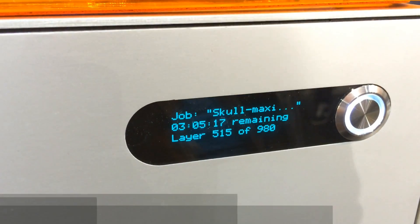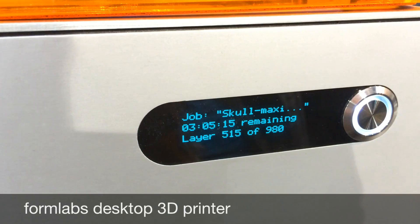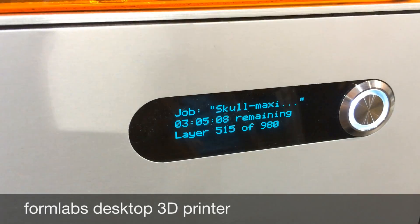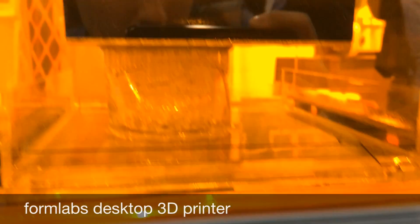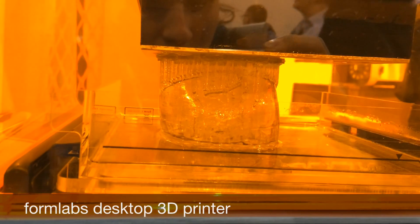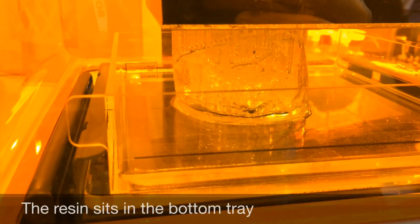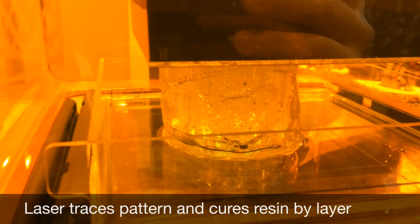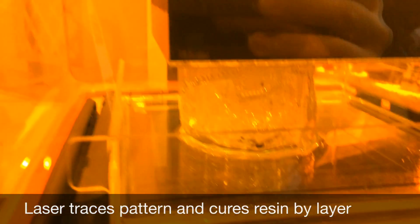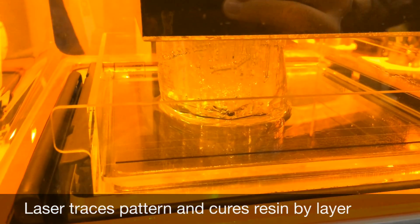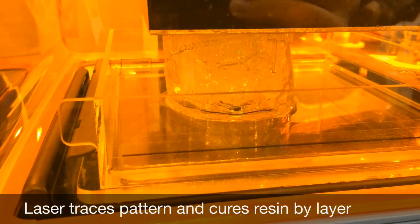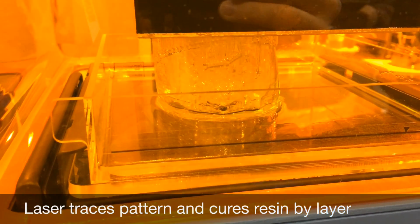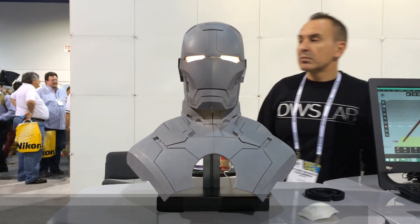So here we have a resin model being printed right now by a laser. It tells you what layer it's on. They are making a skull. So how long total if it's already done about a third of it? It takes about eight hours total to print this crystal skull here. This is really cool. Now that looks like Iron Man.